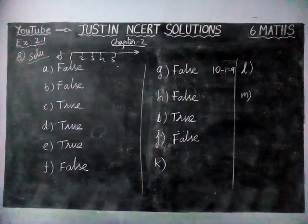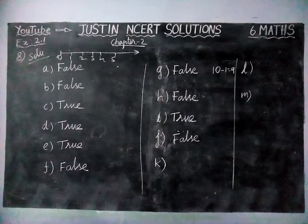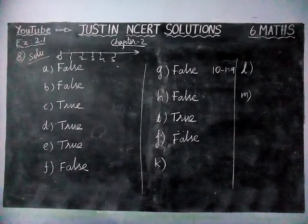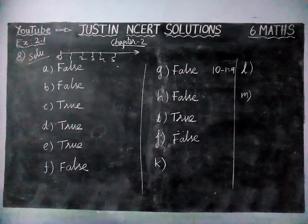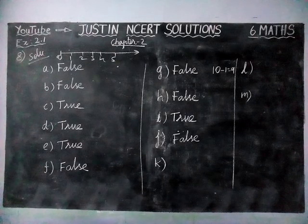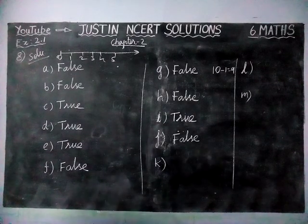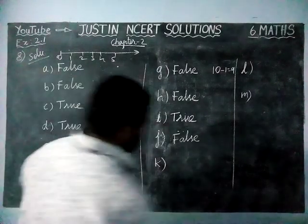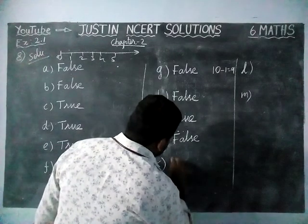Next, option K: 'The whole number 13 lies between 11 and 12.' In between 11 and 12, we don't have any whole number. Therefore, this statement is false.